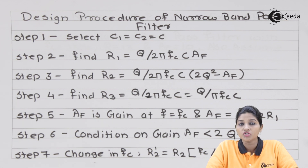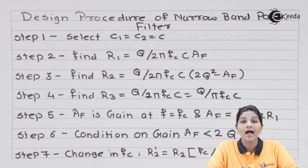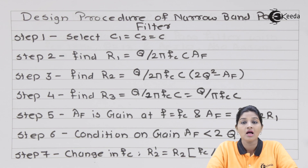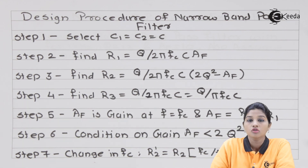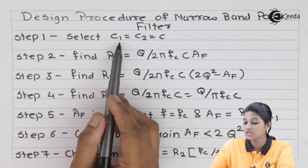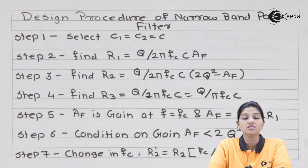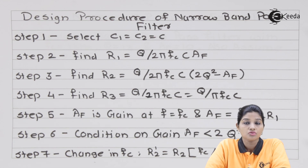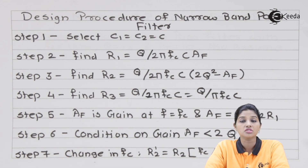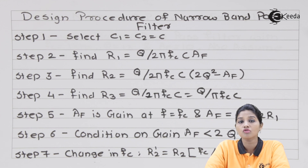In a narrow band pass filter, the gain and Q factor play an important role. Each resistor has a different formula, and since it uses two capacitors, the first step of designing is to select the value of the capacitors equal to each other. So step one is: select C1 = C2 = C. C1 is connected to the inverting configuration and C2 is in the feedback path. For simplification, both are considered equal to C.